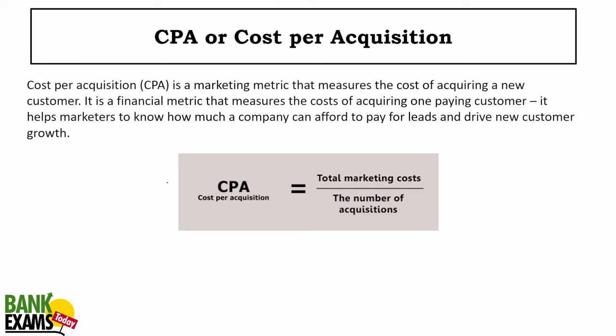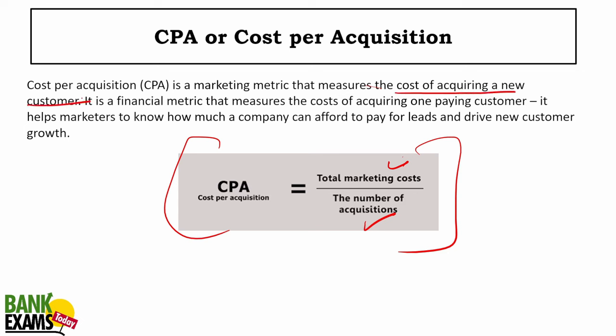CPA or cost per acquisition: the formula is total marketing cost divided by number of acquisitions. Here we are concerned about acquiring a new customer. CPA is a financial metric that measures the cost of acquiring a new customer. For example, if total marketing cost is 10,000 rupees and you acquire 10 new customers, then your CPA is 1,000 rupees. Please remember the formula.